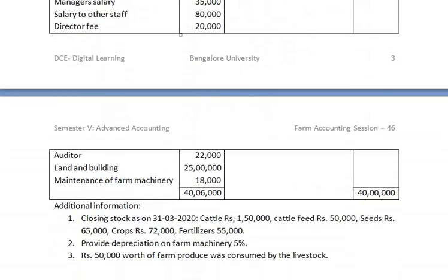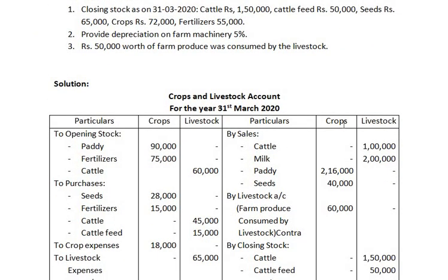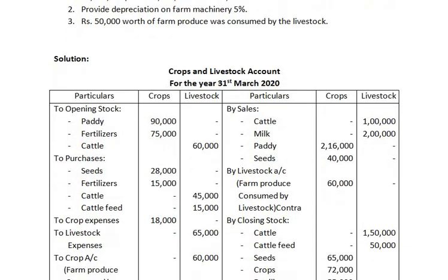Adjustments: Closing stock as on 31st March 2020 — cattle, cattle feed, seeds, crops, fertilizer — has to be credited to the crop and livestock account and also recorded as closing stock on the asset side of the balance sheet. Provide depreciation on farm machinery: depreciation has to be debited to the crop account, and the depreciation amount has to be deducted from farm machinery on the asset side of the balance sheet.